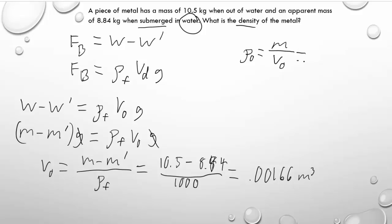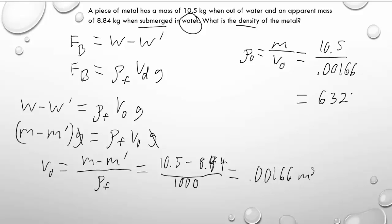Now we come back to our density equation. We've got the actual mass of 10.5 kg divided by the volume we just found, and that gives us a density of 6,325 kilograms per cubic meter. A little bit of work to get through this, but not too bad.